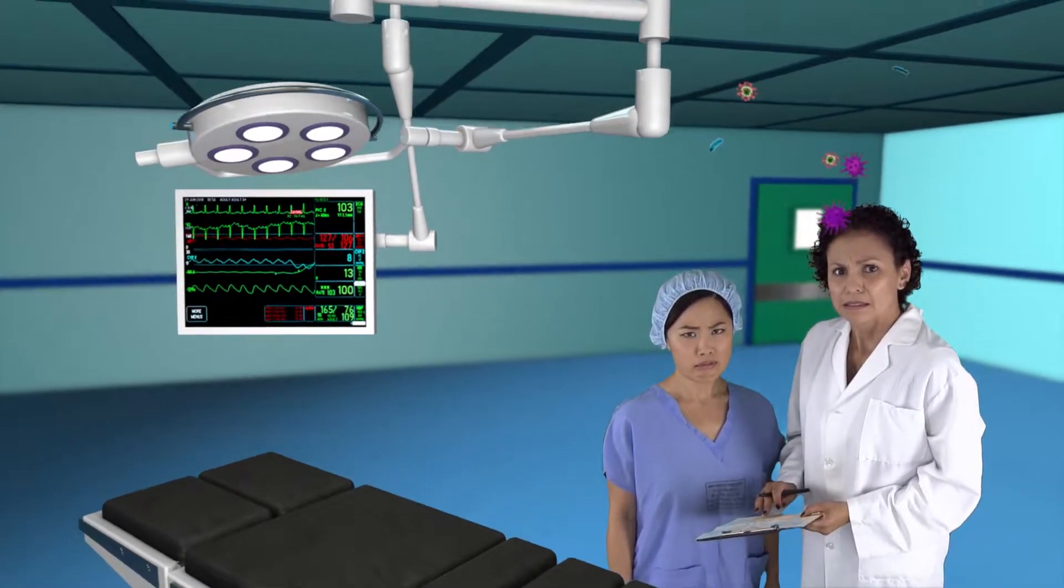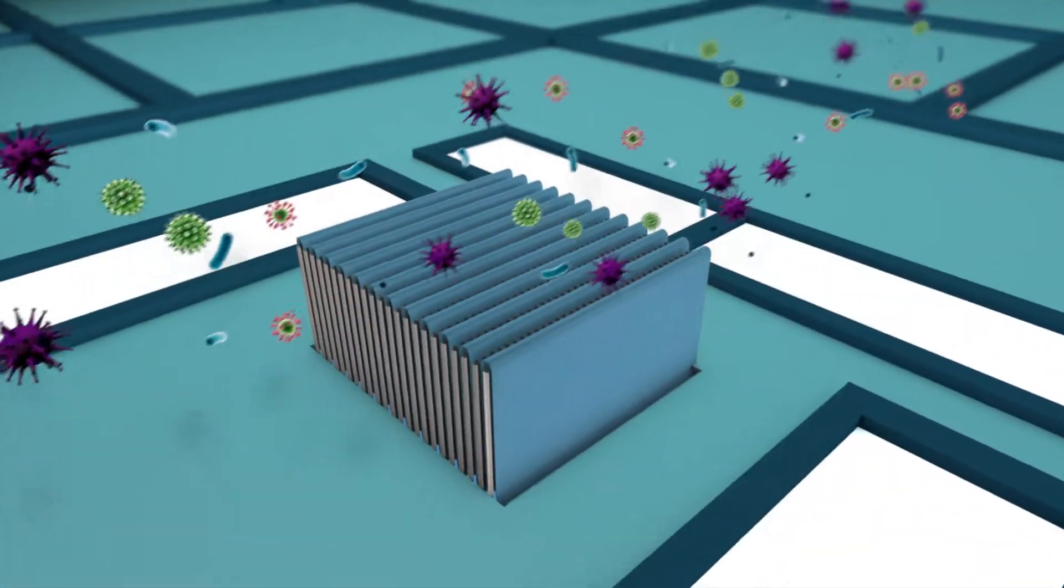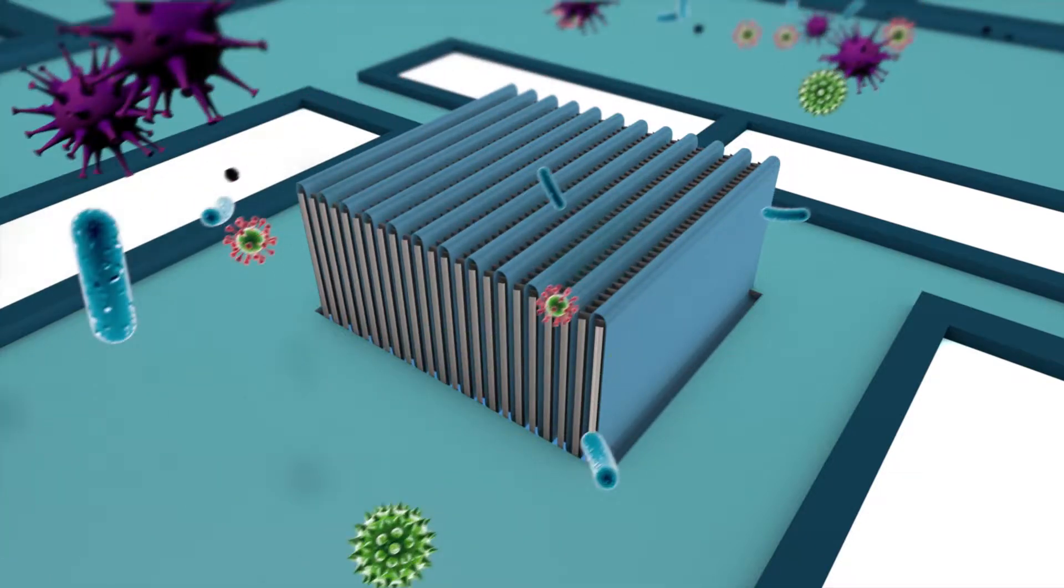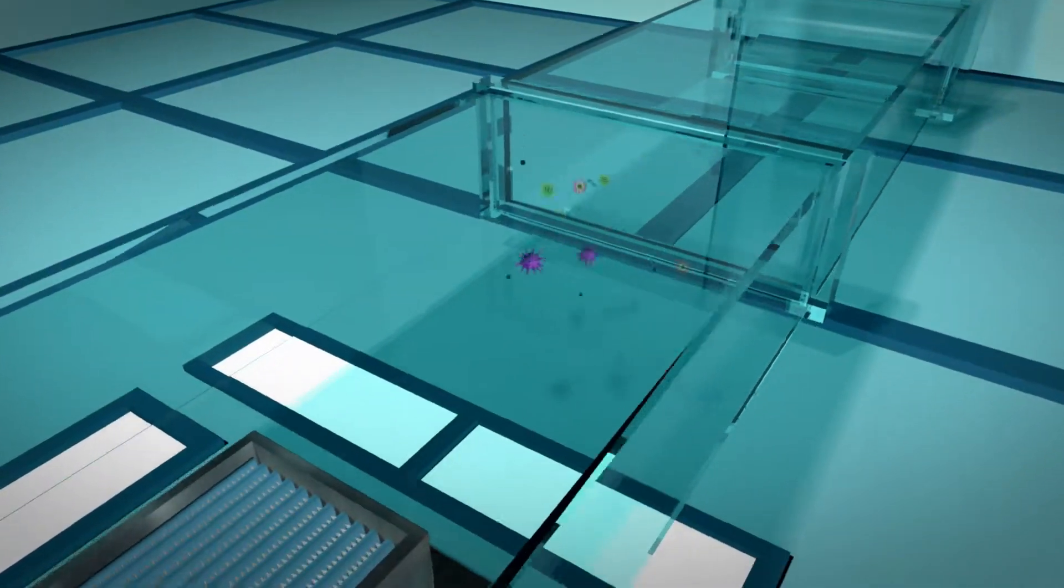Hospitals feel protected by the use of HEPA filters that block up to 99.97% of particulates. However, one cubic foot of air typically contains 100,000 microparticles. With air traveling at approximately 800 feet per minute through a 24-inch square duct, we have 80 million particles.